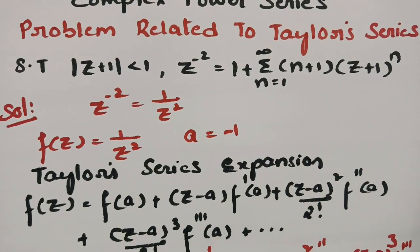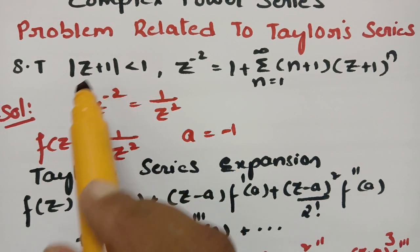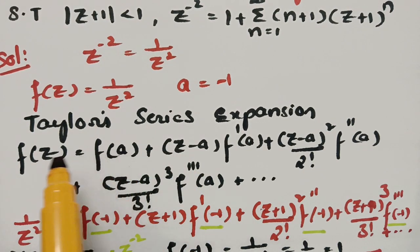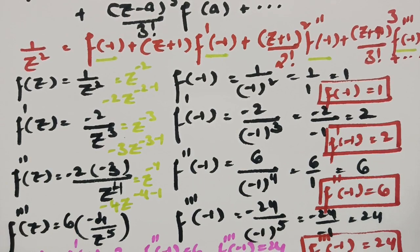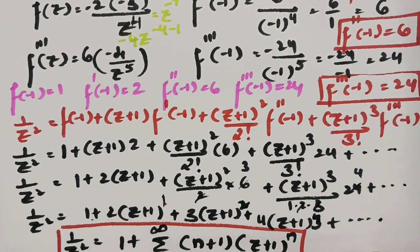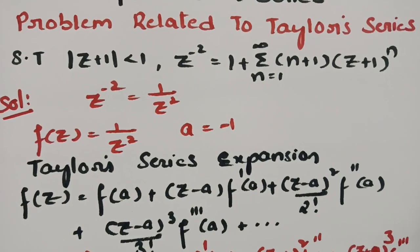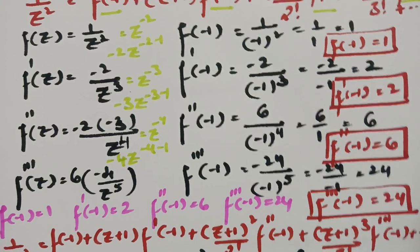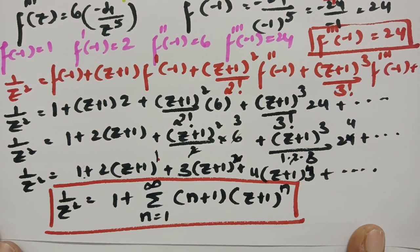This is the most important question related to the Taylor series expansion. We took f(z) = 1/z² with a = −1, wrote the Taylor series formula, computed three derivatives, substituted all values, and arrived at the final result. This is how we solve this type of problem.